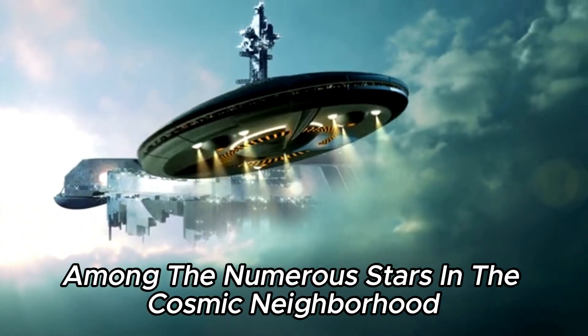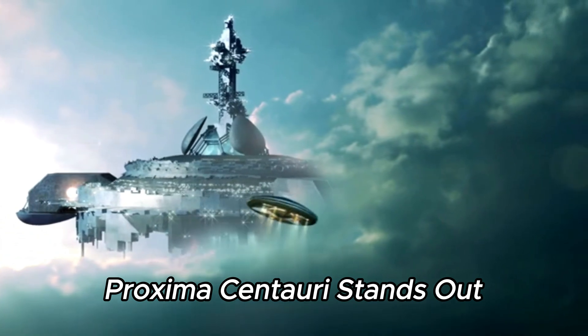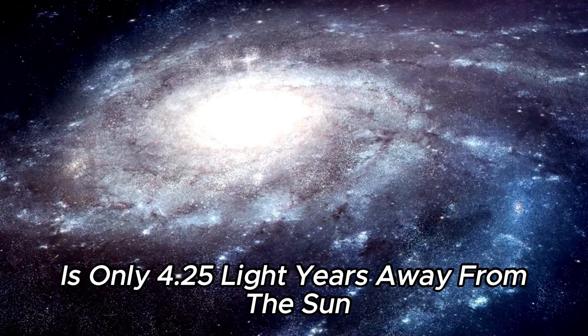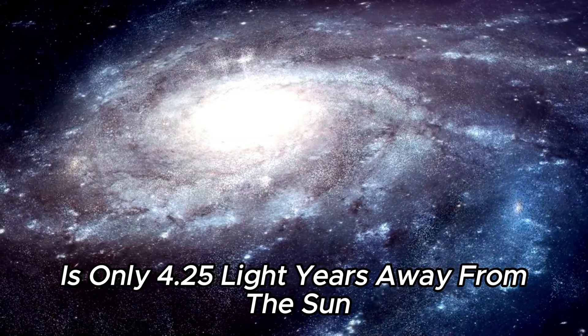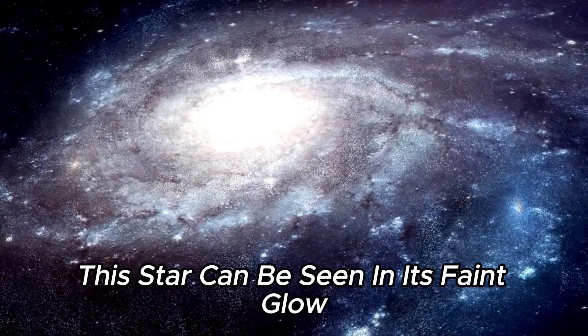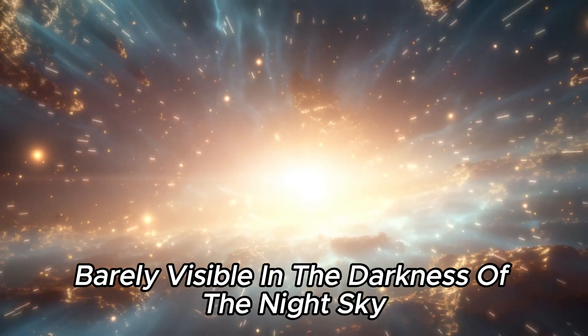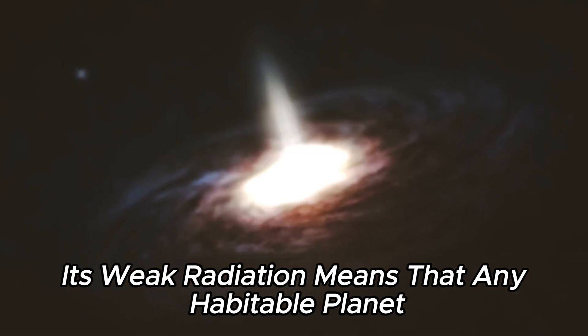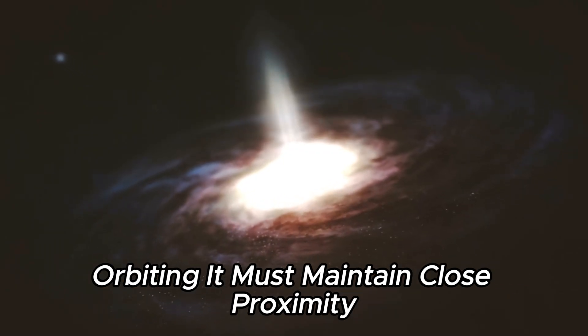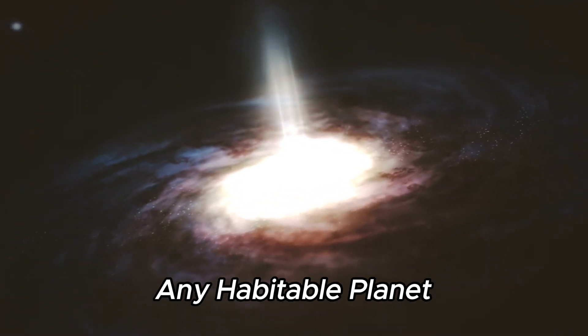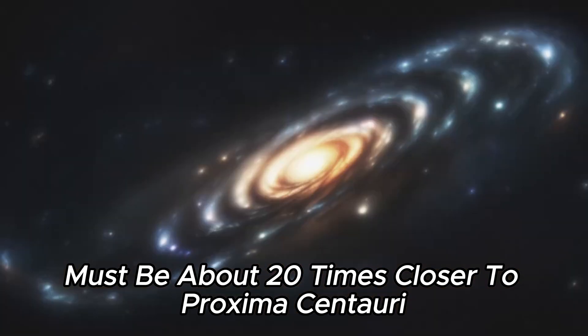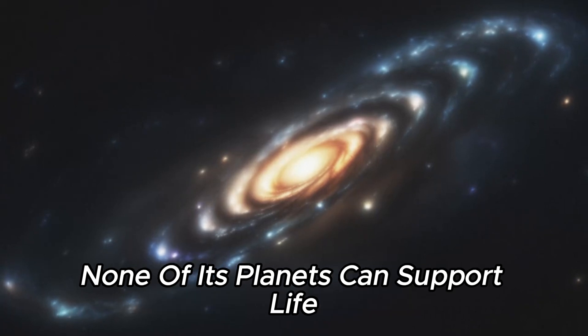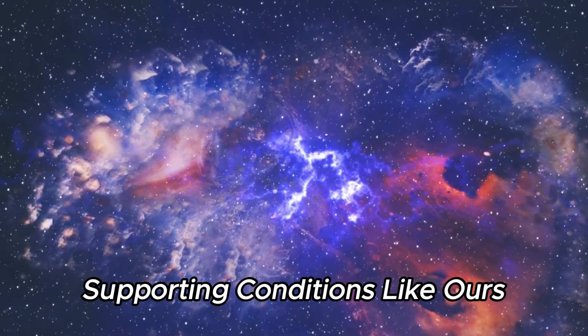Among the numerous stars in the cosmic neighborhood, Proxima Centauri stands out as a reference for possible life. Proxima Centauri is only 4.25 light years away from the sun, the nearest star to our star. This star can be seen in its faint glow, barely visible in the darkness of the night sky. Its weak radiation means that any habitable planet orbiting it must maintain close proximity. Any habitable planet must be about 20 times closer to Proxima Centauri than Earth is to the sun. Without meeting this condition, none of its planets can support life-supporting conditions like ours.